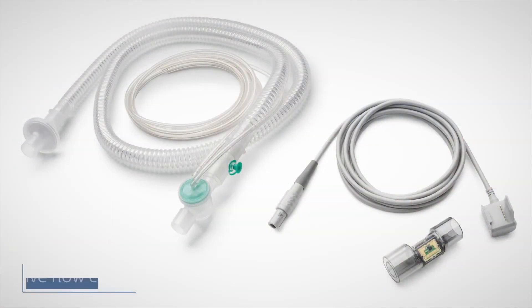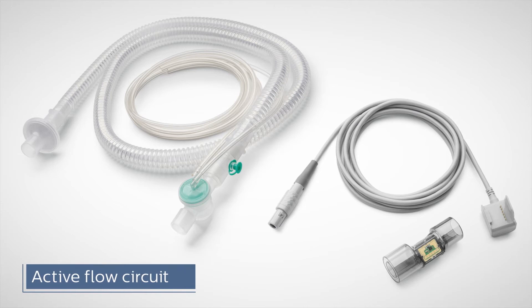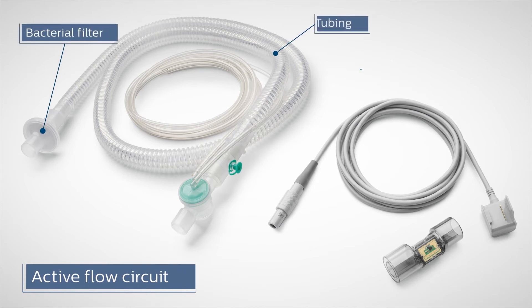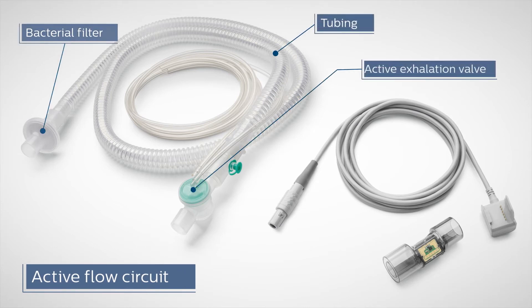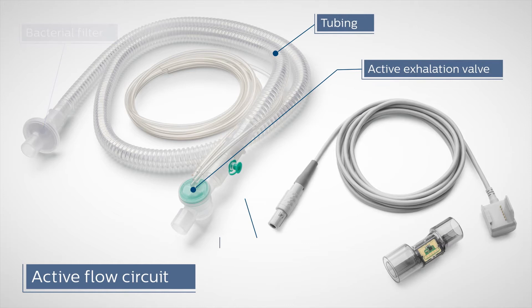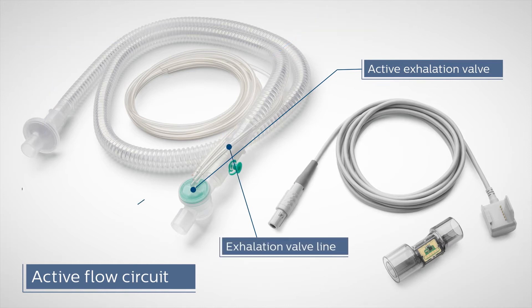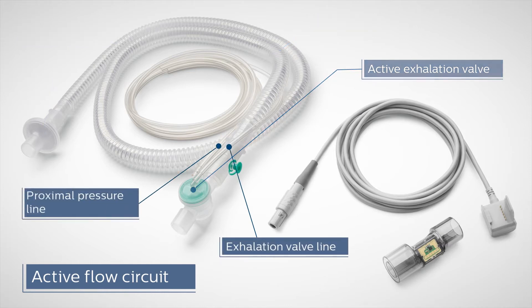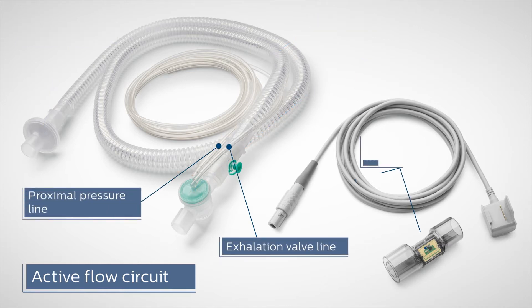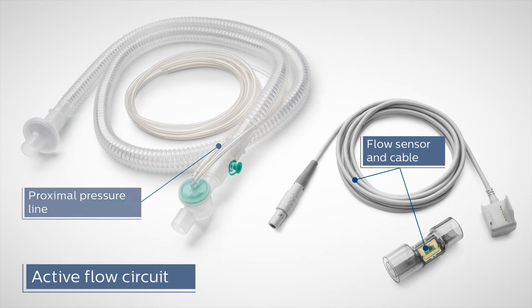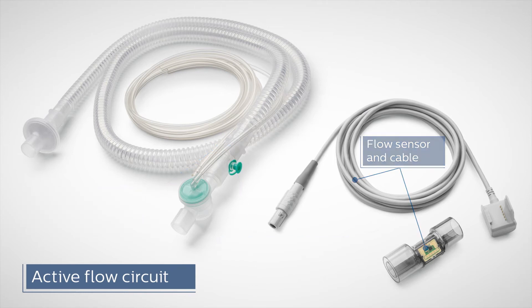The active flow circuit consists of a bacterial filter, tubing, active exhalation valve, exhalation valve line, proximal pressure line, flow sensor, and cable. Essentially, this is the active PAP circuit with an added flow sensor and cable.